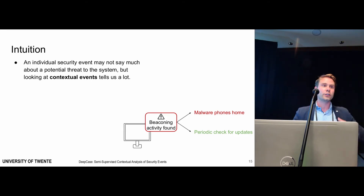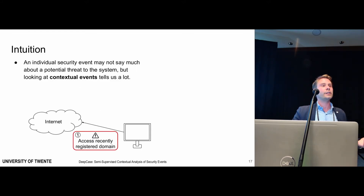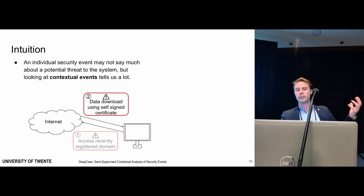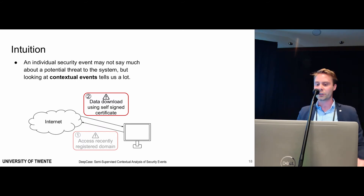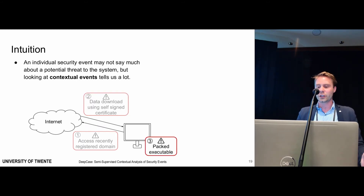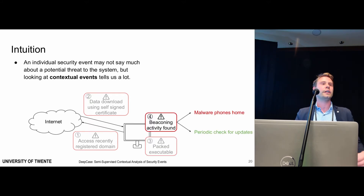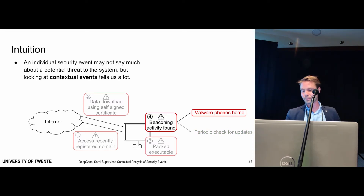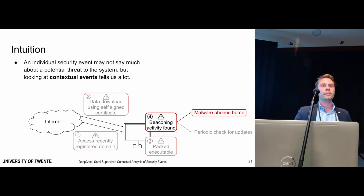By just looking at the beaconing event by itself, it might be difficult to determine what is going on. So instead we look at the context around it. Suppose we initially find some weird network behavior accessing a recently registered domain, then data being downloaded which triggers an alert, then a packed executable found on the device, and then the beaconing activity. Looking at the event in this context, it becomes clear that this is more likely malware trying to phone home. We tried to use this key insight in our automated tool called DeepCase.